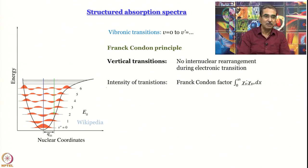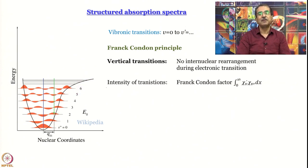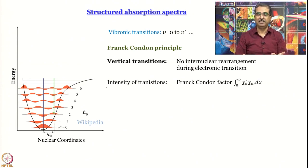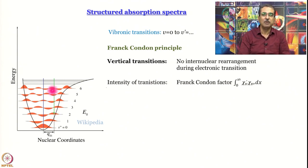These wave functions go a little beyond the potential energy surface because quantization arises out of boundary conditions. The boundary conditions for these wave functions are that they must vanish at internuclear separations of infinity and minus infinity, which is why they extend beyond the potential energy surface.